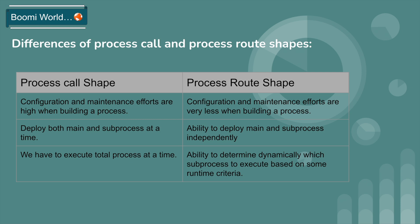Process call shape configuration and maintenance efforts are high when building a process. Process route shape configuration and maintenance efforts are very less. If you are using process call shape, we need to deploy both the main and sub process at the same time. If you are using process route shape, we have deployment flexibility — process route shape will allow you to deploy the main and sub process independently.